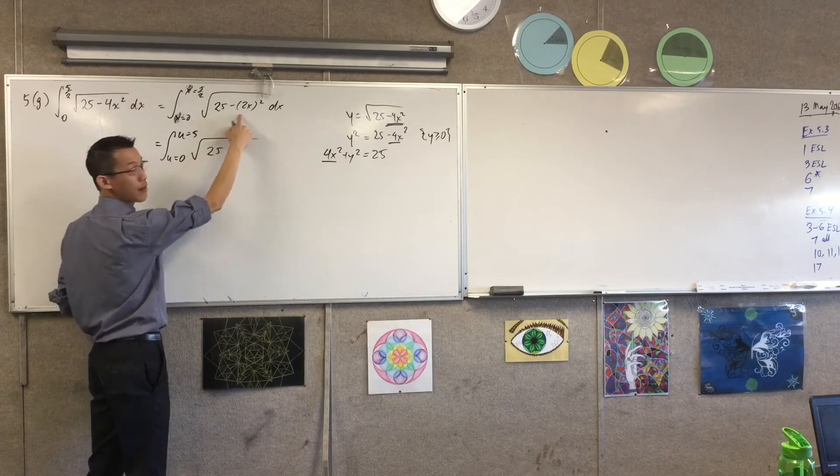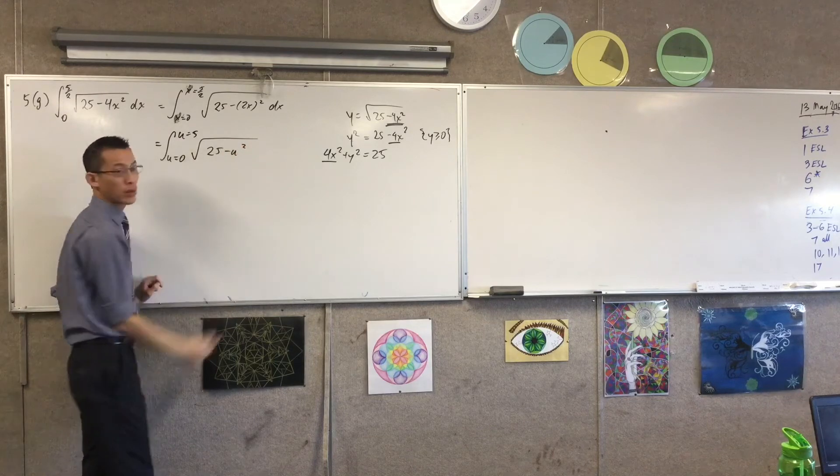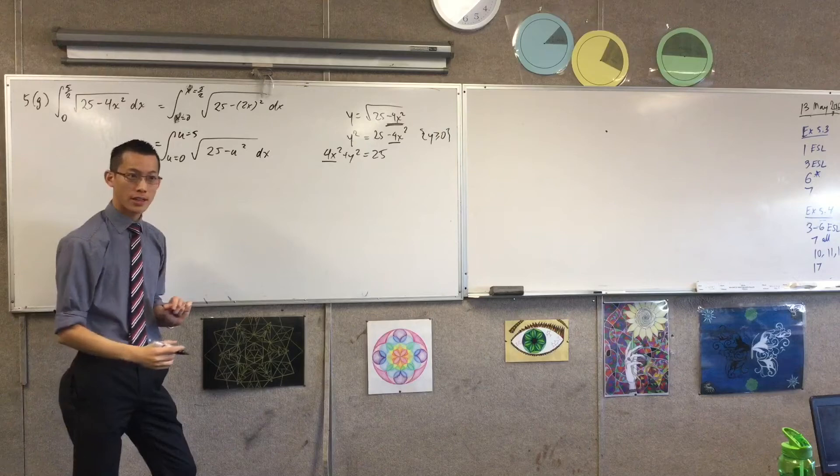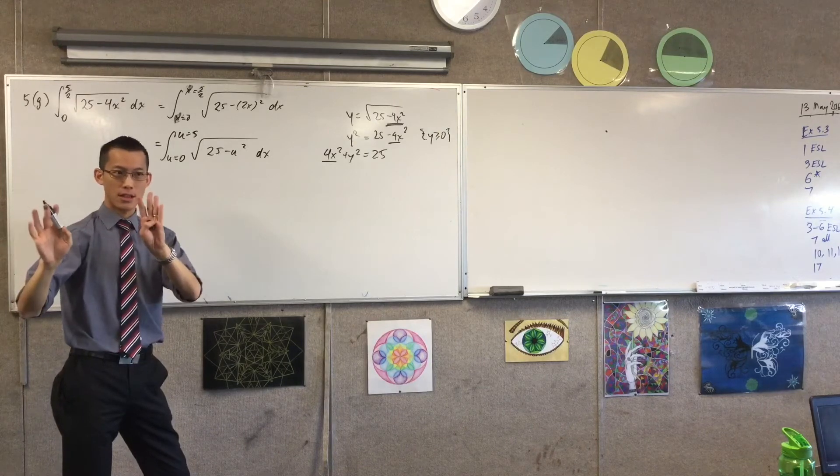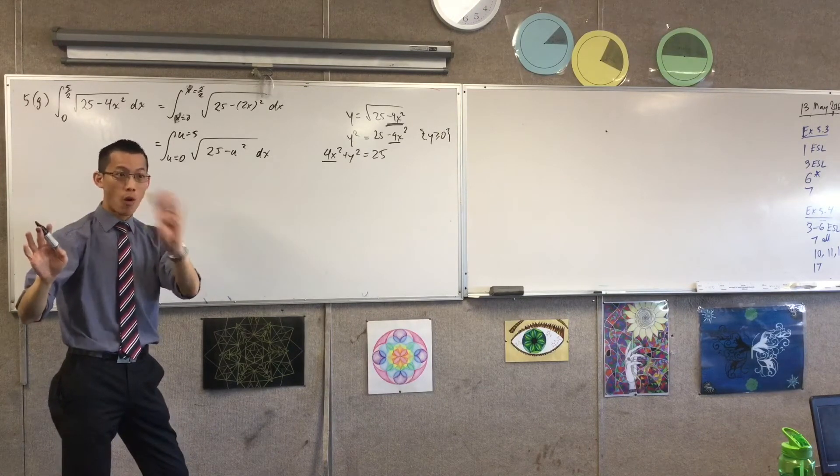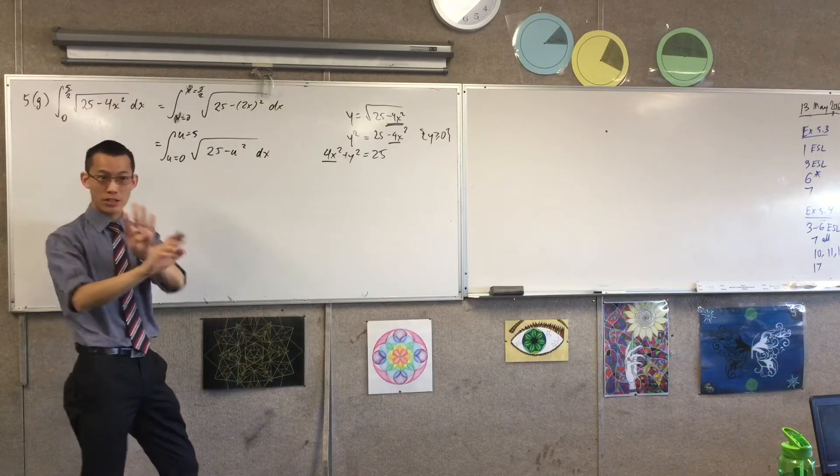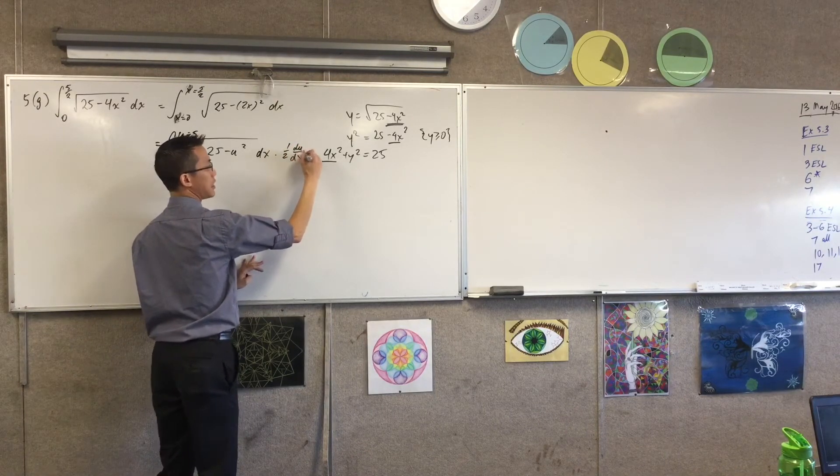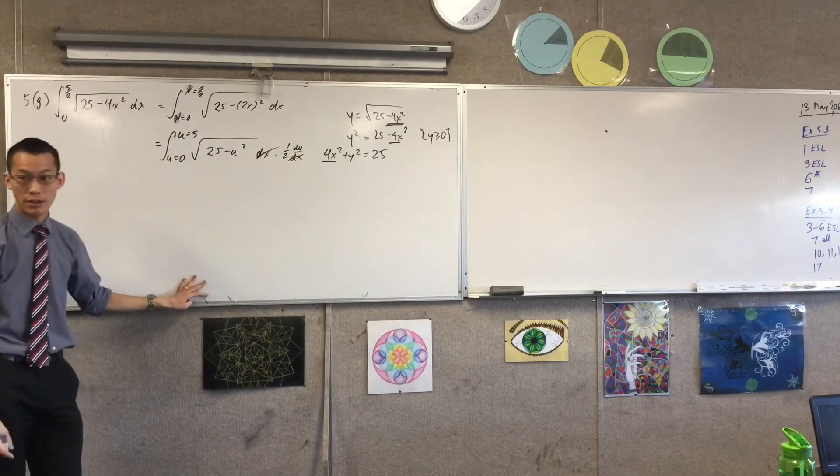I chose the substitution 2x equals u. So that's what I've got there. This dx is still there, but the way I resolve it is that du on dx is 2. So 1, which is in there, is half du on dx. We've written this before, right? So I'm going to have half du on dx there. Cancel, cancel. I'm ready to integrate.